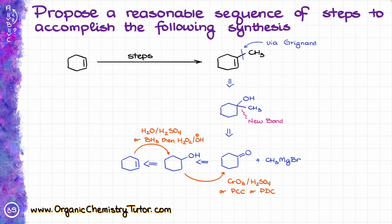For the next reaction, we are going to do the reaction of our carbonyl with the Grignard reagent itself. The first step is the reaction with CH₃MgBr, and of course, like with any organometallic reaction, the second step has to be an acidic workup to protonate the O⁻ intermediate that we are going to get.